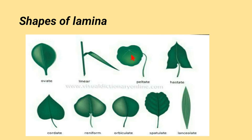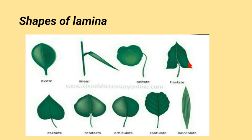A peltate leaf is recognized because the petiole is attached to the underside of the lamina rather than at the leaf base. We also have the hastate leaf — it is a spear-shaped leaf with two flaring lobe-shaped projections on each side.